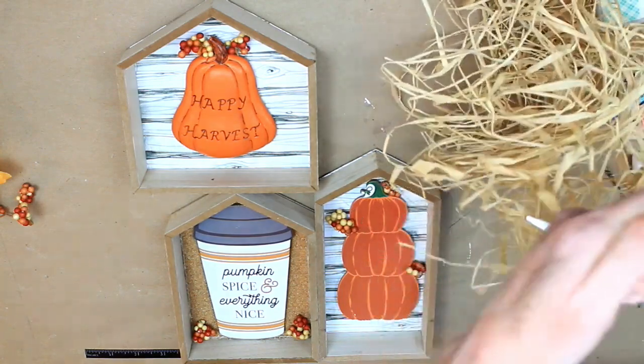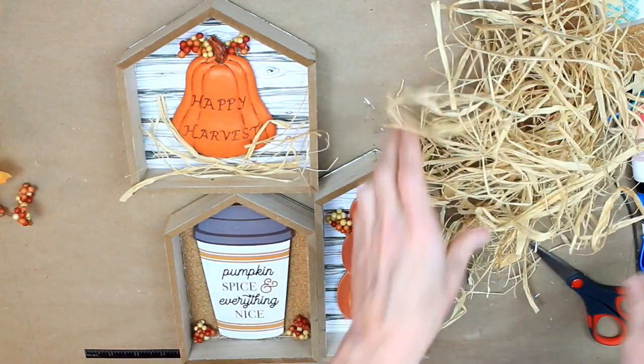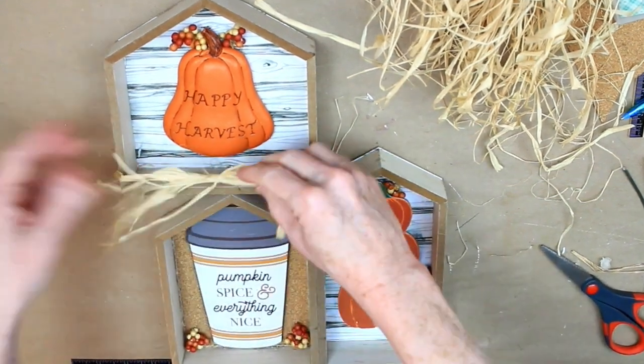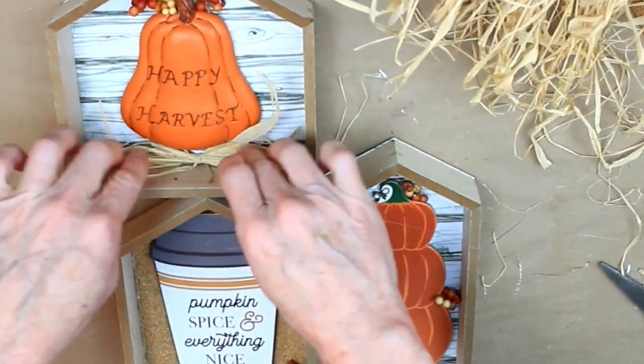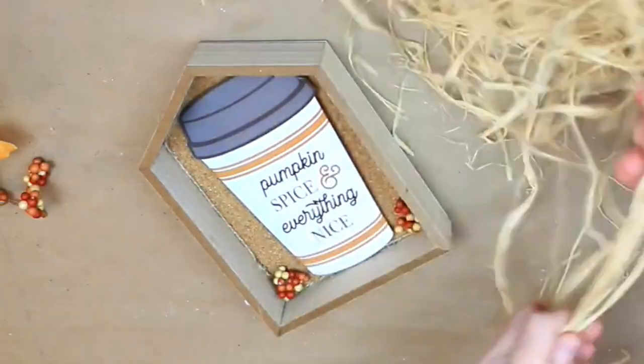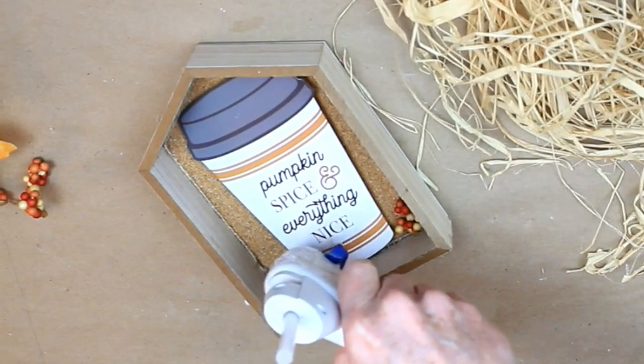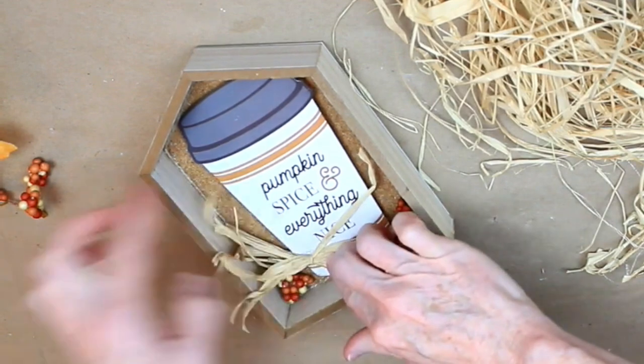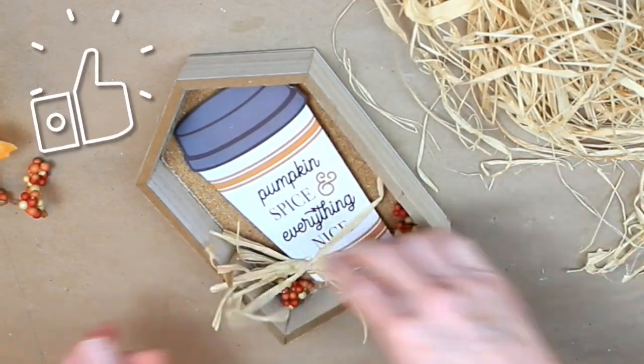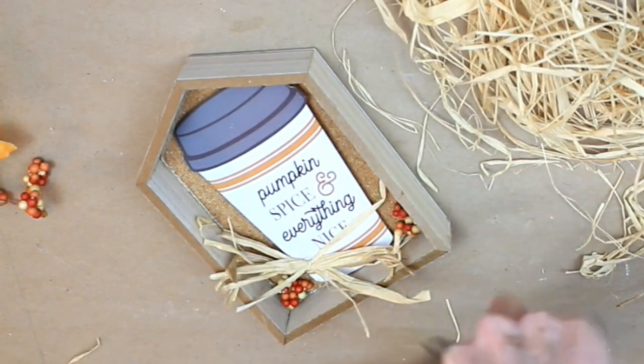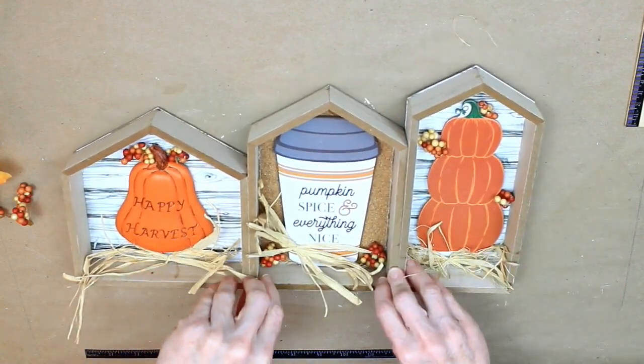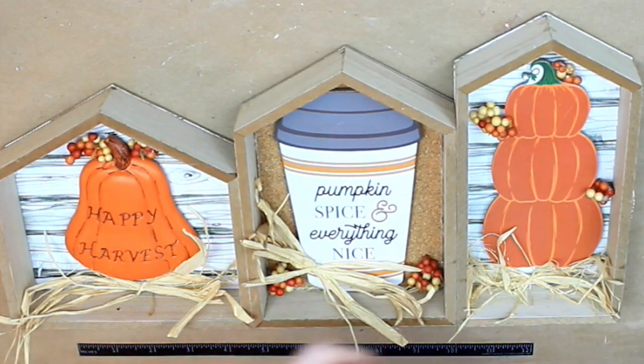Then you can see I've already put some on the Happy Harvest pumpkin up there. And then this is some thrifted raffia. You can use the hula skirts from Dollar Tree if you'd like, but I went ahead and used this. All I did was just tie one of the little strings of it around the center to hold it together and give it a place to hold the glue and hold in place. And did it there for the pumpkins as well. And this one I'm going to do the same way with a little tie in the middle. But rather than gluing it straight onto the bottom, I've done it sort of at an angle.